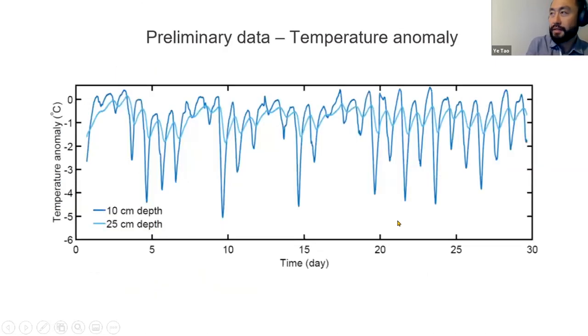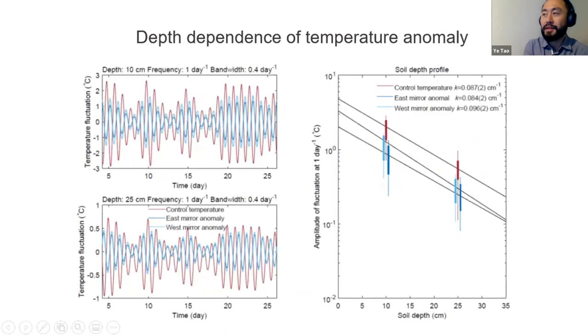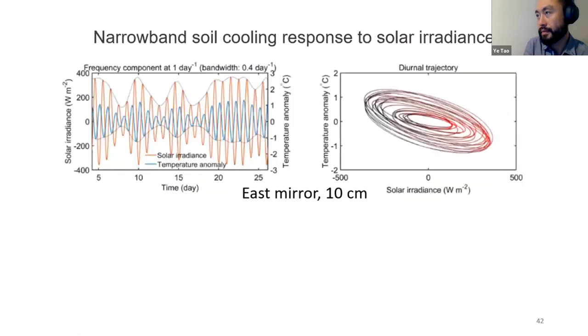The anomaly is the difference between temperature in the perturbation field and the control field. We see spikes at around noon of each day. The same process can be applied to analyze the anomaly data, and the depth dependence is still quite comparable to the actual temperature fluctuations.